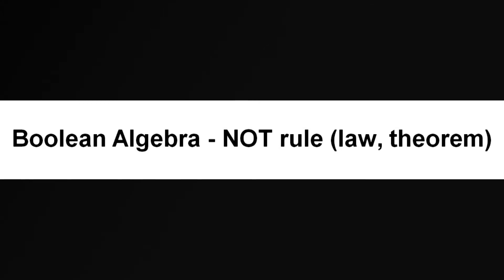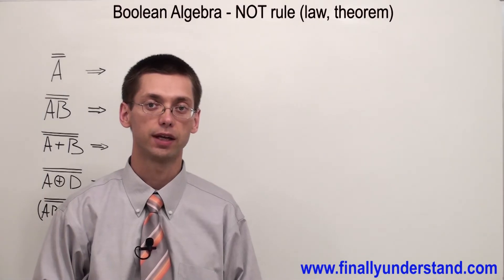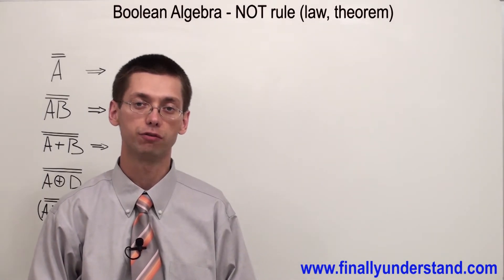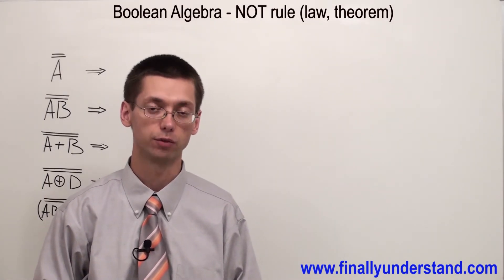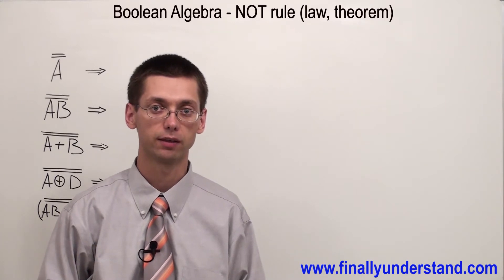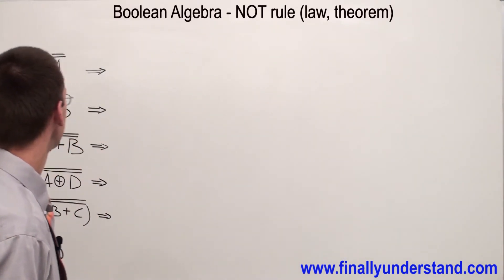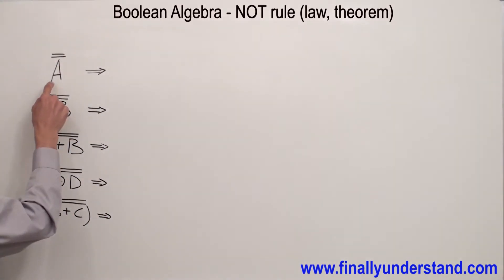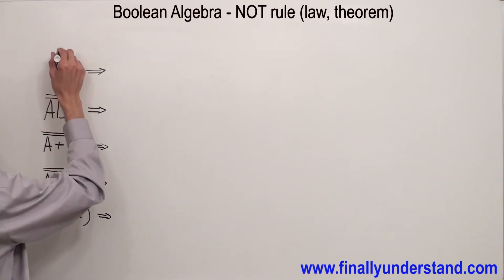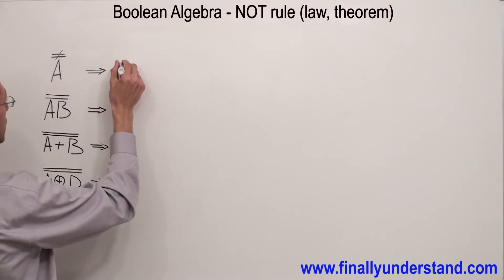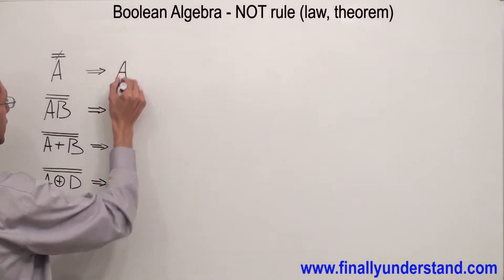Negation theorem says that anytime you invert the variable or term twice, you obtain the same variable. Simply, anytime you have a variable and above the variable you have two bars which are equal in length, you cancel them out. That's why your answer for this expression is just A.